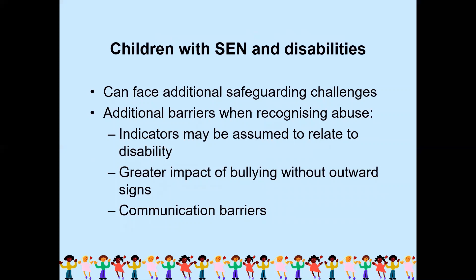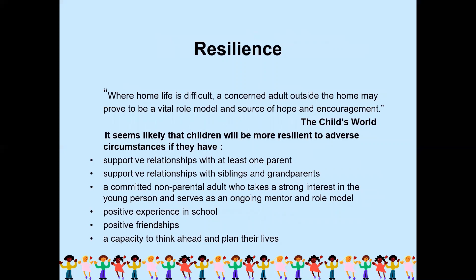Children with SEN and disabilities can face additional safeguarding challenges and barriers when recognizing abuse. Indicators may be assumed to relate to the disability, and there is a greater impact of bullying and communication barriers. A trusted adult outside the home can prove to be a vital role model, source of hope and encouragement. Children are more resilient to adverse circumstances if they have supportive relationships with at least one parent, siblings, grandparents, a committed non-parental adult mentor, positive school experiences, positive friendships, and a capacity to plan their lives.